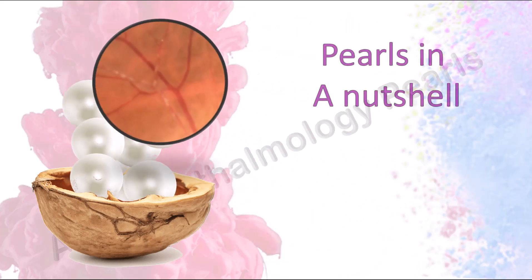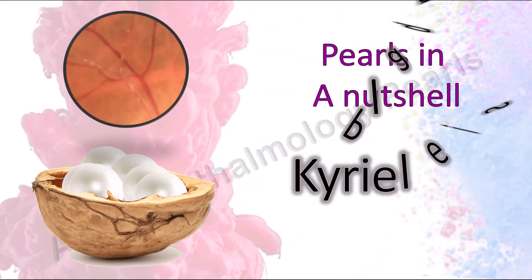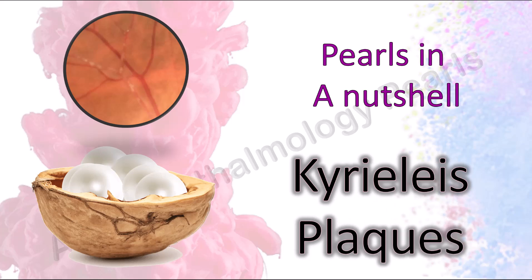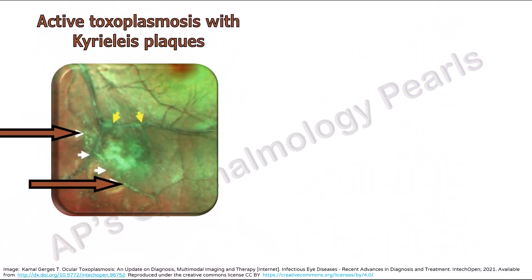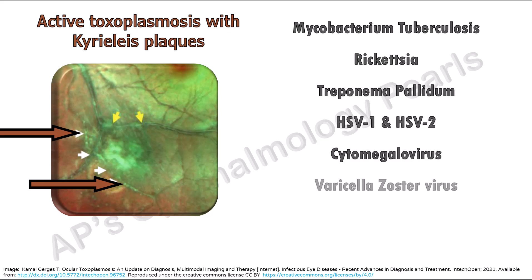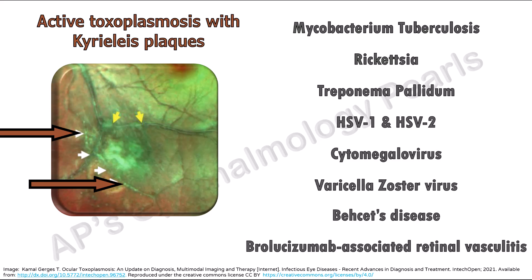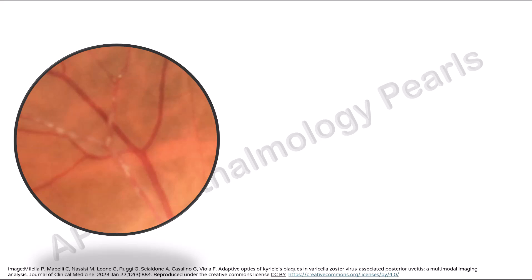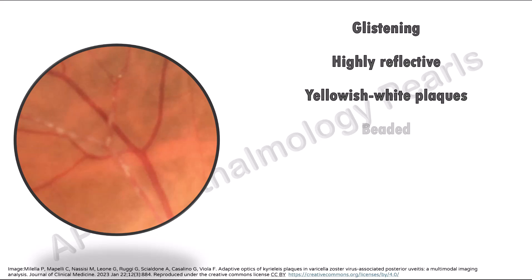Chirilis plaques are intramural accumulations in retinal arterial walls in association with severe posterior segment inflammation, most commonly in Toxoplasma retinochoroiditis. Others are secondary to various infectious agents. They have also been reported in Behcet's and Brolucizumab-associated retinal vasculitis. The typical fundus findings are glistening, highly reflective yellowish-white plaques in a beaded pattern along retinal arteries, either distant from or adjacent to the inflammatory focus. They often look like calcific lesions and cannot be differentiated from perivascular sheathing clinically.